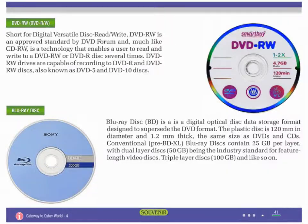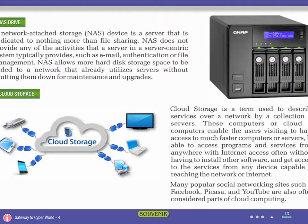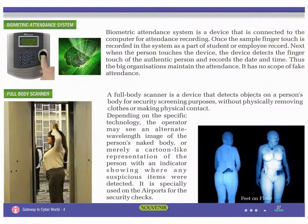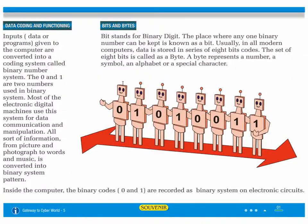Or you can keep it standing like this. We have covered extremely latest information in this book. Like we have given information about Blu-ray disc, cloud storage, 3D printer, biometric devices, Bluetooth, Braille reader, full body scanner, etc. We have designed the book in such a way that the topic is clear with the pictures instead of the text.